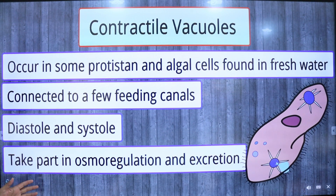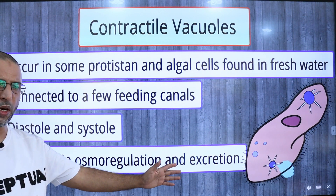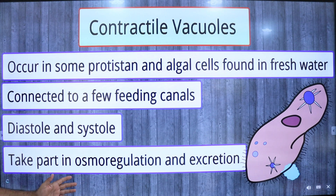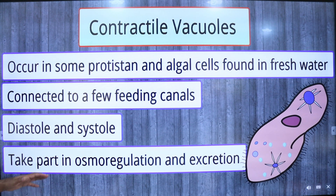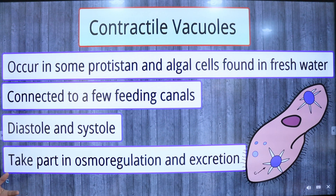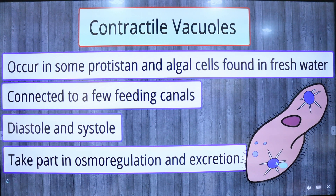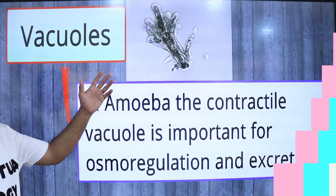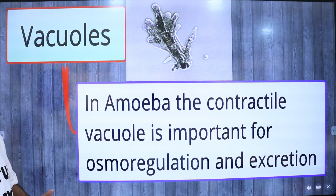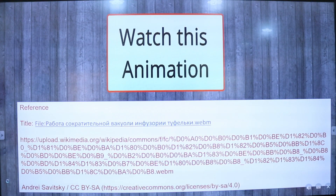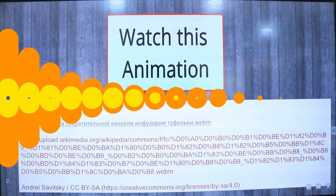Contractile vacuoles play an important role in osmoregulation and excretion. Osmoregulation is the process by which organisms regulate water and electrolyte balance in the body to maintain homeostasis. Excretion is the removal of metabolic wastes from the body. In amoeba, the contractile vacuole is important for osmoregulation and excretion. Let us watch this animation to observe the feeding canals and contractile vacuoles.